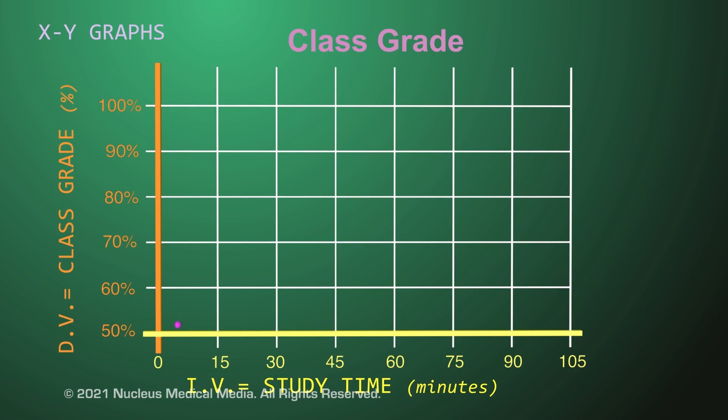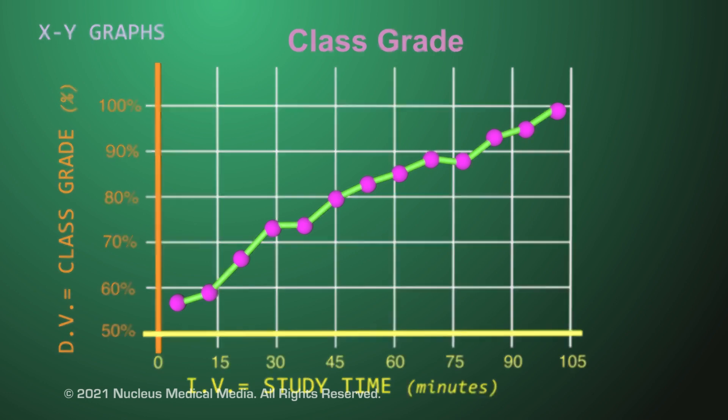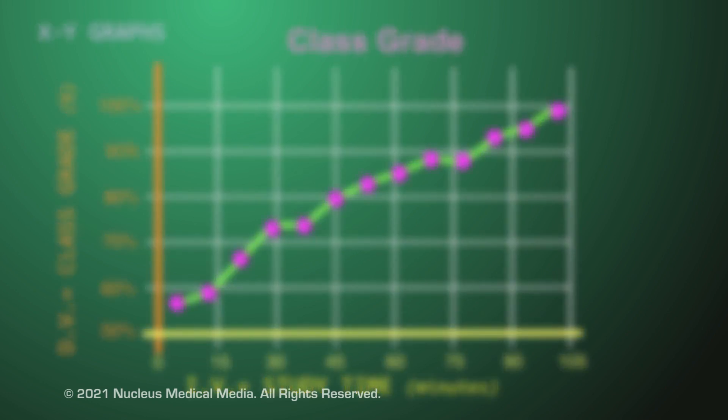You can use XY graphs to look for trends in the relationship between the independent and dependent variables. If the values of both of these variables rise, then a line connecting the data points will show an upward trend. This means the variables are positively correlated.